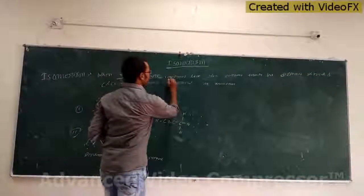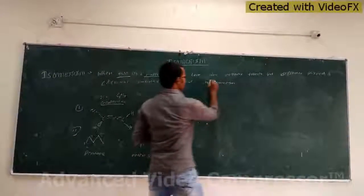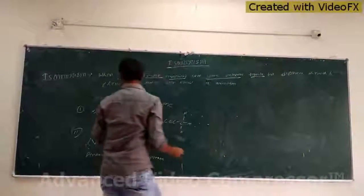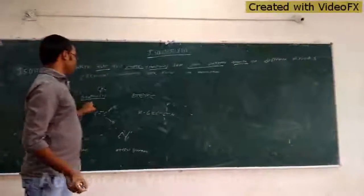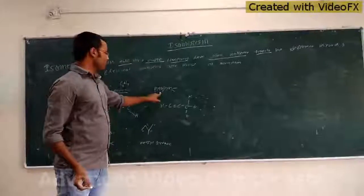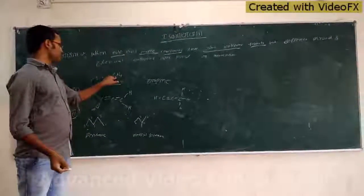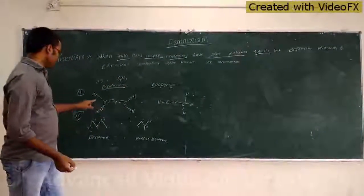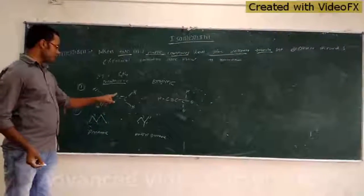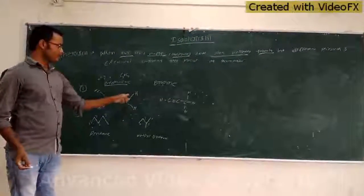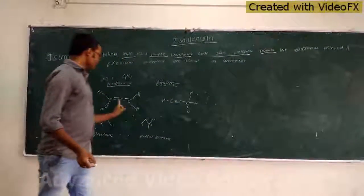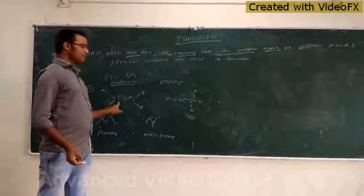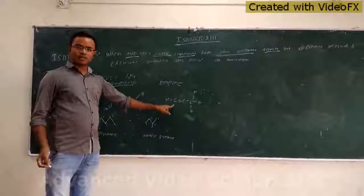When two or more compounds have the same molecular formula — just like C3H4, propyne and propadiene. The molecular formula is the same, C3H4. But they are structurally different. Both are different compounds and both physical properties and chemical properties are different.